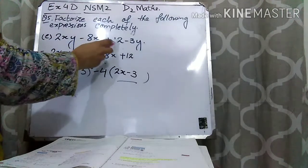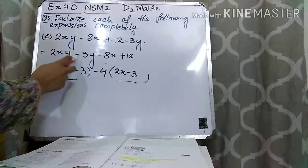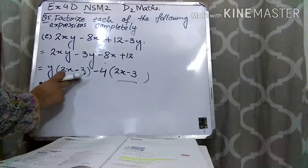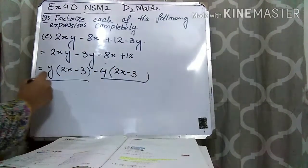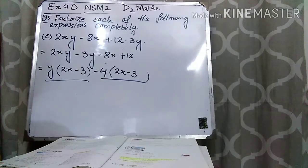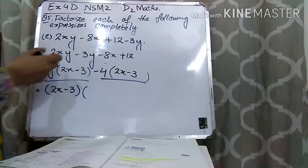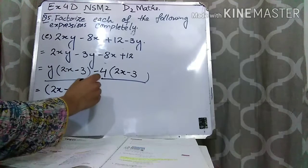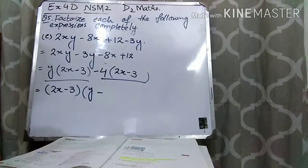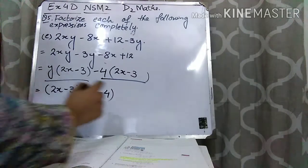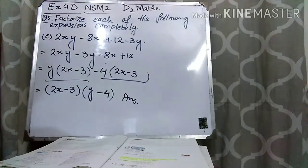I have written the first and last term together, and the middle two terms together, to make these brackets common. Now you can see that 2x minus 3 is present in both terms, so I can take 2x minus 3 common. What is left? 2x minus 3 is common, so just y is left. And from the second term, just 4 is left. So the answer is (2x minus 3)(y minus 4). I hope that part E is clear to you.